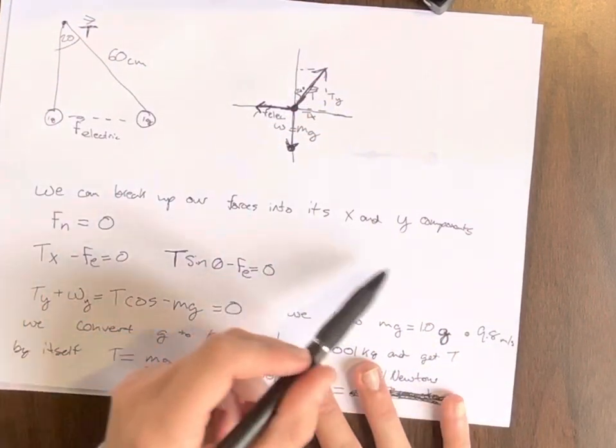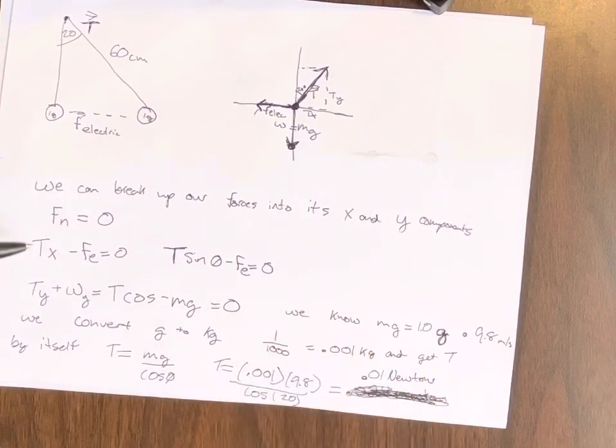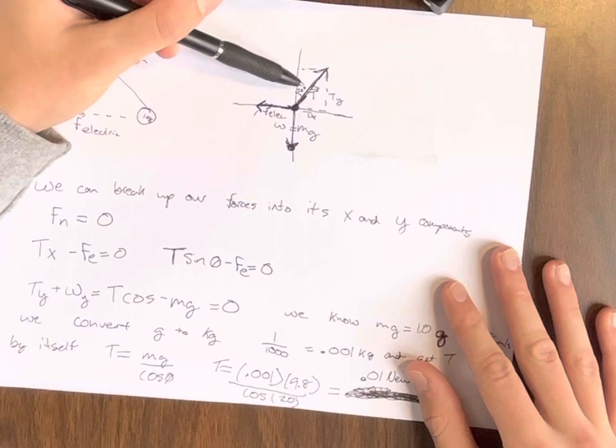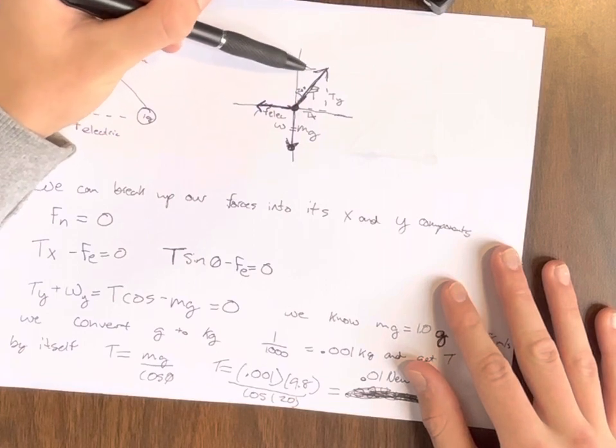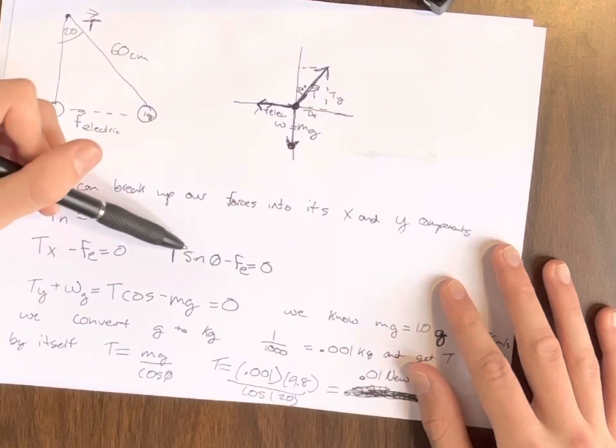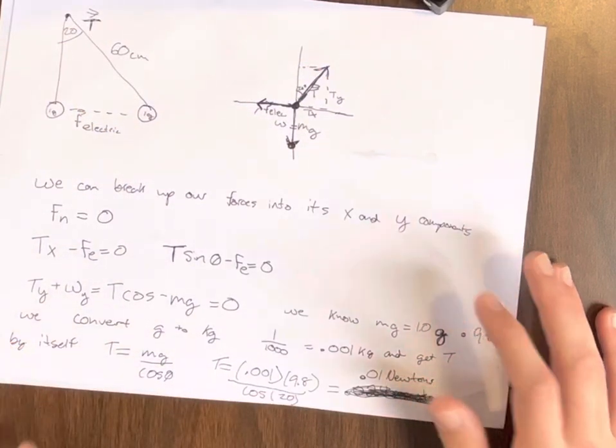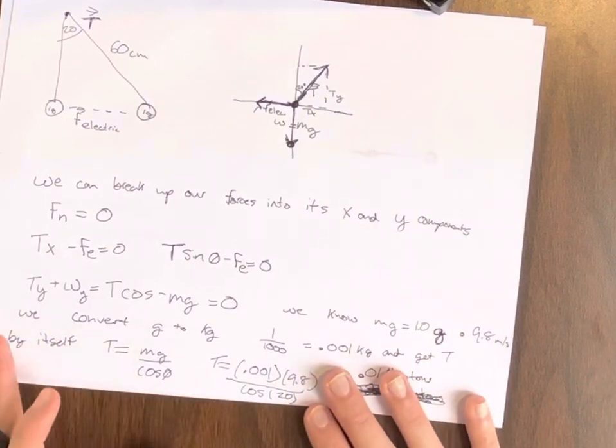So we can break up our forces into X and Y components, our net force equaling zero, and our tension in the X-direction, which is going to be sine theta. It's here, right here. Our tension in the X-direction, tension sine theta minus our F-electric will equal zero.